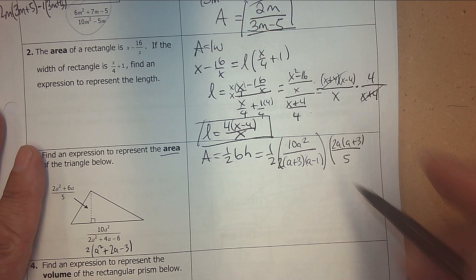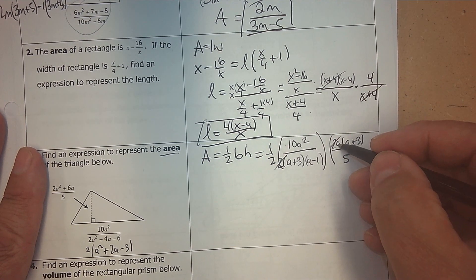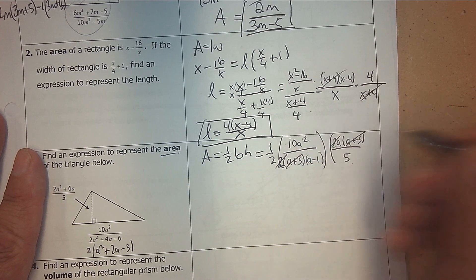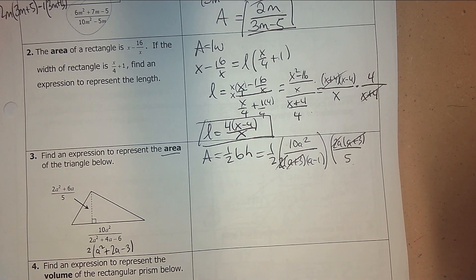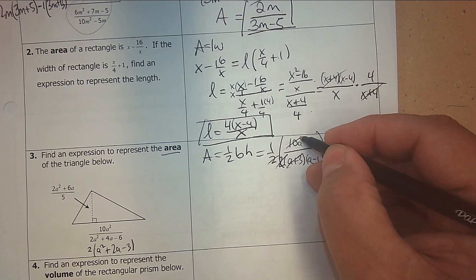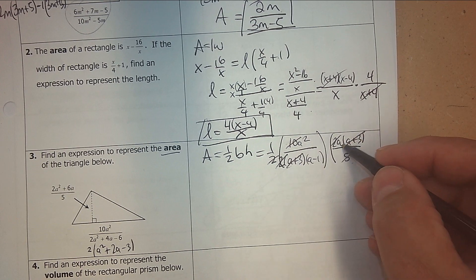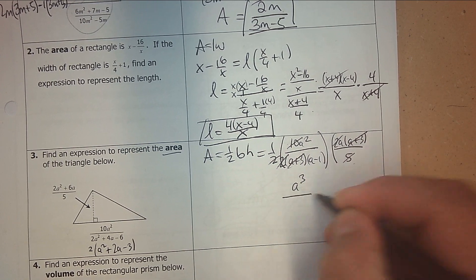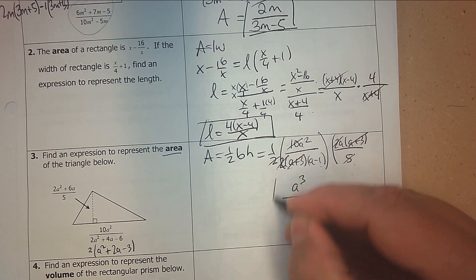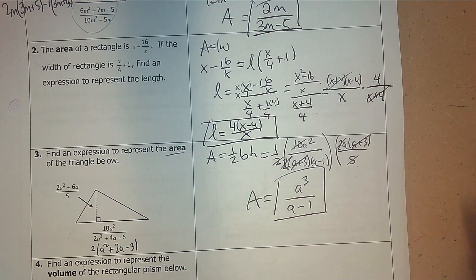Handle the 2 and 2 — they strike out. There's no a to strike out. The a plus 3s cancel. 2 times 5 is 10, so they strike out. I'm left with a squared times a, which is a cubed, and the only thing left in the denominator is a subtract 1. So that represents the area of the triangle.